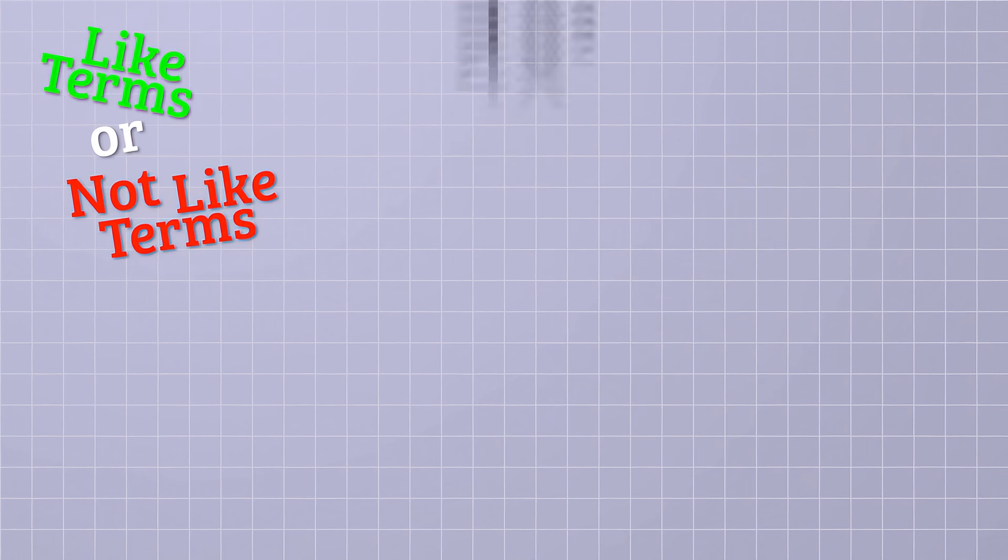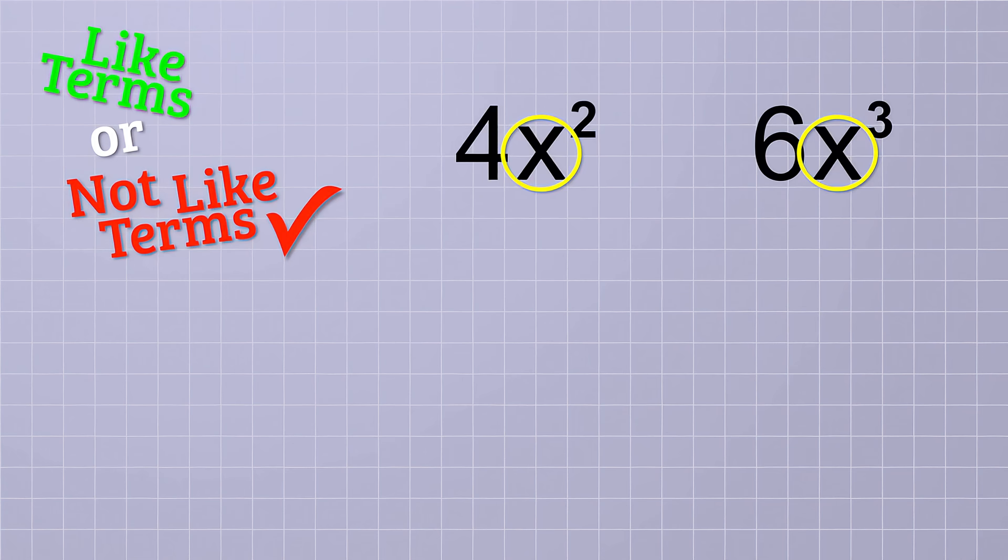Our next pair of terms is 4x squared and 6x cubed. Are these like terms? Nope. Even though the variable is x in both cases, the exponents are different. So the variable parts are NOT the same.